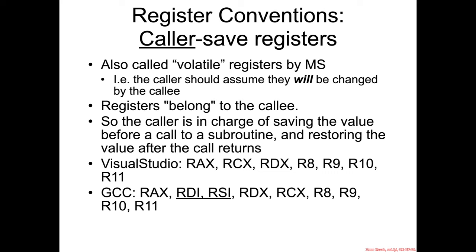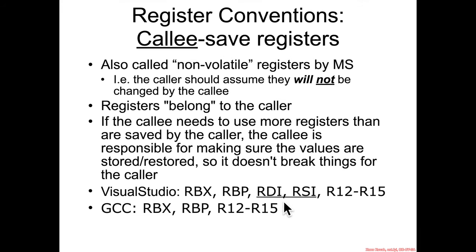The first sub-element of a calling convention is the register conventions. We have the caller-saved registers, also called volatile registers by Microsoft. A caller — a function which is calling some other function — should assume that these registers will be changed by the callee, and therefore the caller is responsible for saving those registers before calling something so it can restore them later if it doesn't want them smashed by the callee. The caller-saved registers for Visual Studio are RAX, RCX, RDX, etc. For GCC, these register lists differ only in terms of RDI and RSI — GCC and other System V ABI compilers save RDI and RSI in the caller, which implies those two are callee-saved registers in the Visual Studio convention.